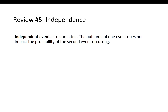The last point I want to review is independence. Independent events are unrelated — the outcome of one event does not impact the probability of the second event occurring. In terms of conditional probabilities, the probability of A equals the probability of A given B. Knowing that B occurred does not change the likelihood of A occurring. Another way to look at this is that there is no relationship or correlation between the events. For more in-depth reviews, go back to Lesson 2 or post a question to your course discussion board in Canvas.